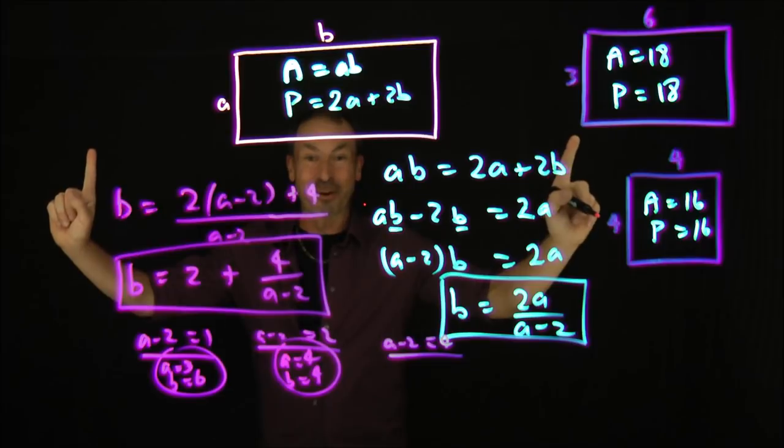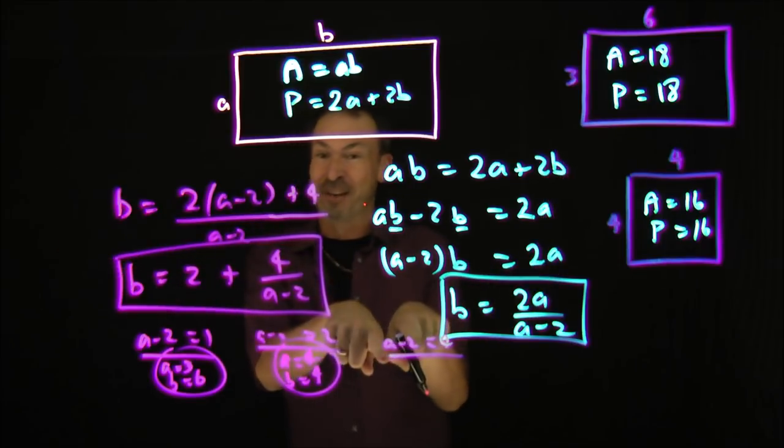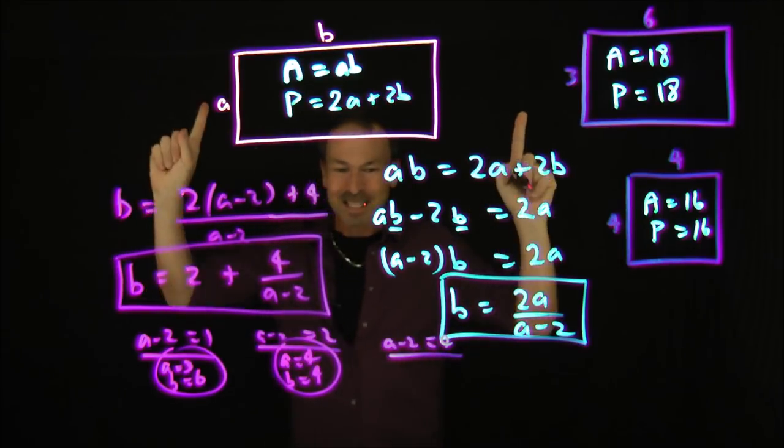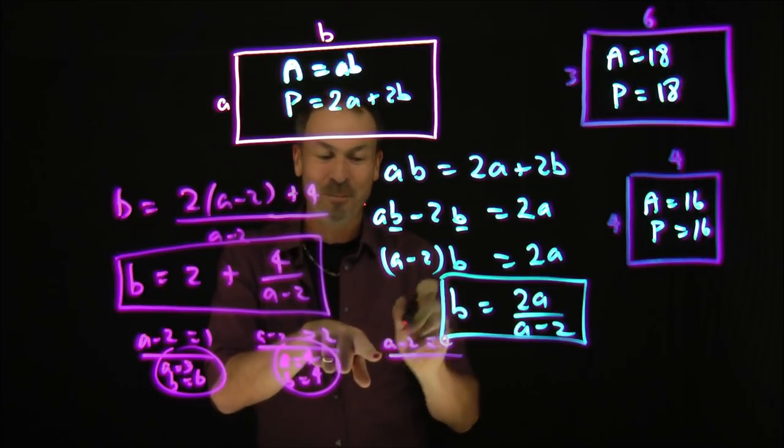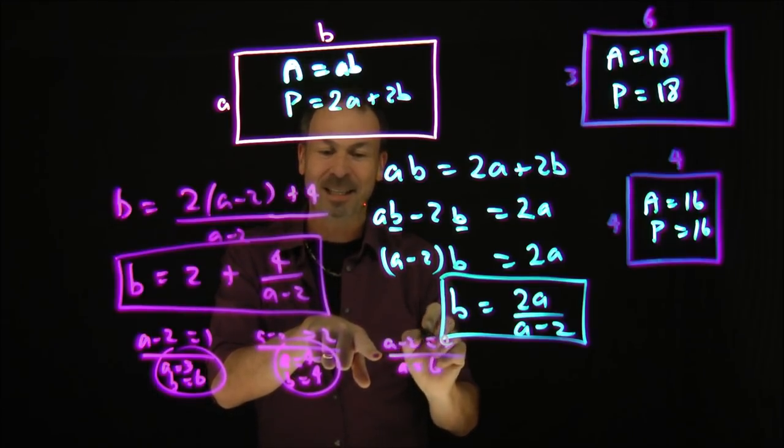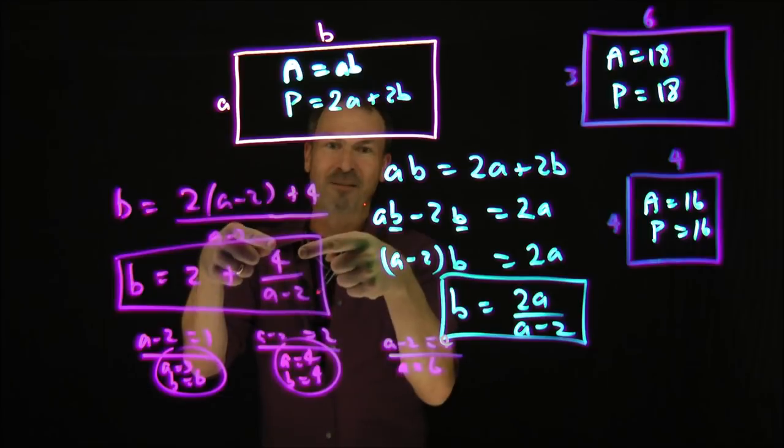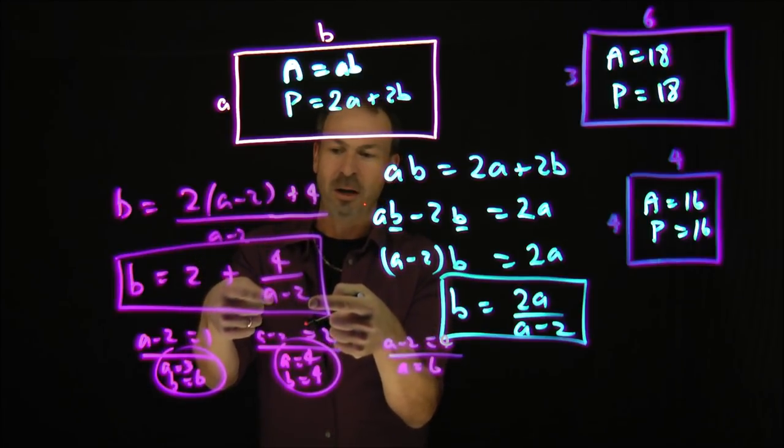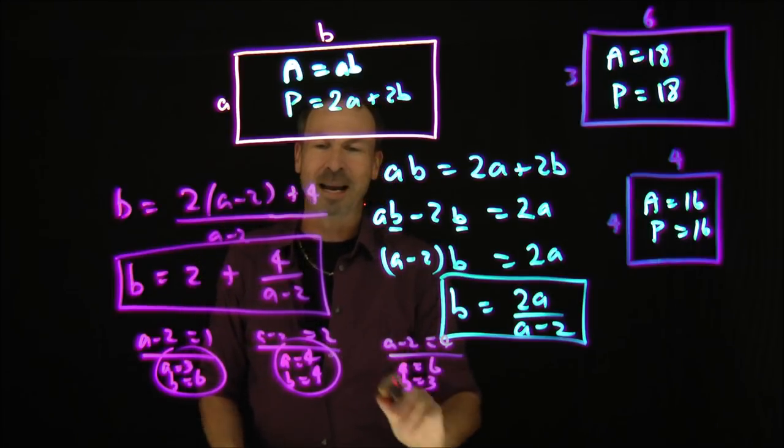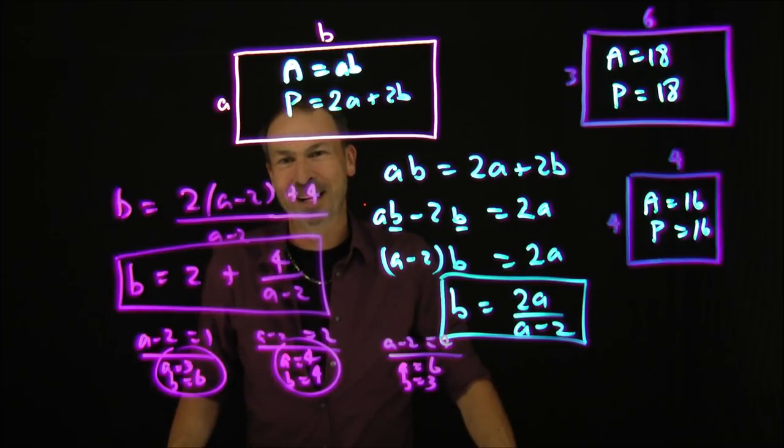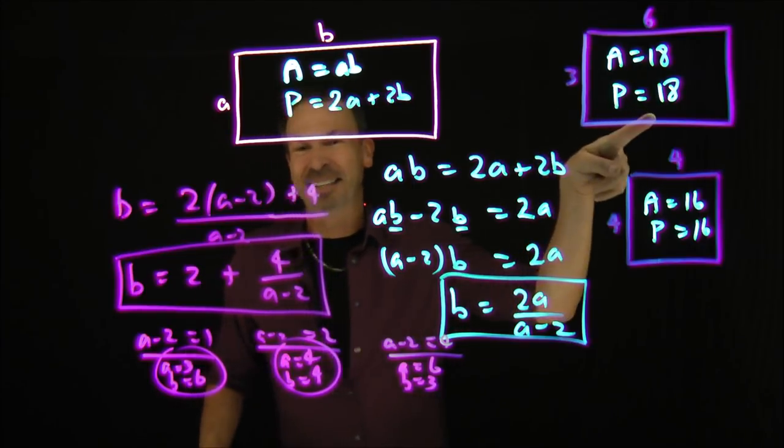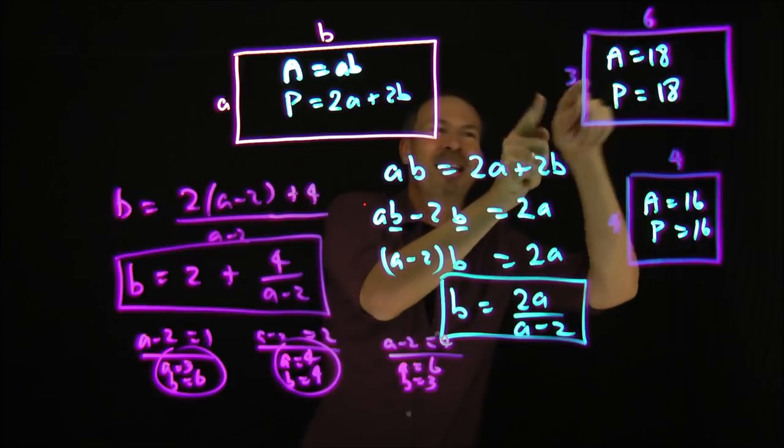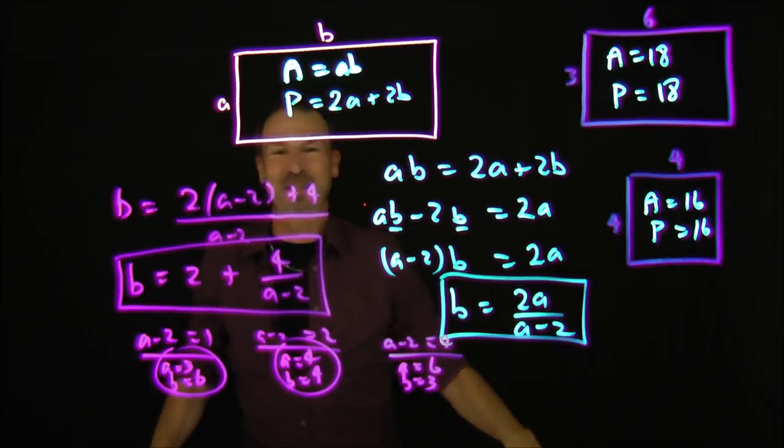It looks like we've got a third example coming our way because I've got another third factor to explore. A minus two is four. That means A better be six. And then B would be two plus four over four. B would have to be three. We'd have a six by three rectangle.